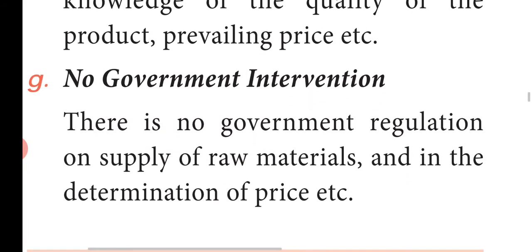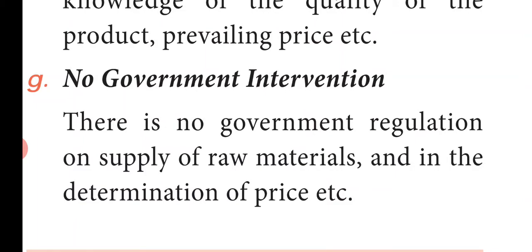Feature 7: No government intervention. There is no government regulation on the supply of raw material and in the determination of price. To summarize, the features of perfect competition are: large number of buyers and sellers, homogeneous product, free entry and exit, absence of transport cost, perfect knowledge of market, perfect mobility of factors of production, and no government intervention.